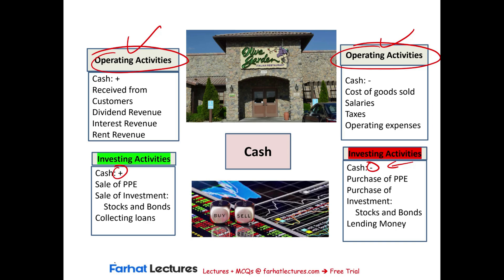Investing activities involve investing in yourself. How would a company invest in itself? For example, think of a company like Olive Garden — it's an Italian restaurant chain. When they want to grow, they buy a new building, kitchen equipment, furniture for the store, or a computer system. All of those are considered property, plant, and equipment. They're investing in themselves, and when they spend money on such items, that's an outflow of cash.